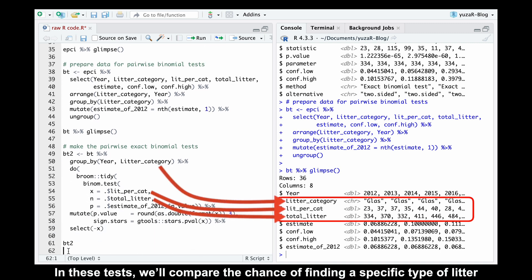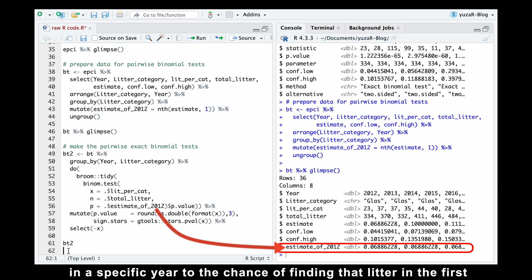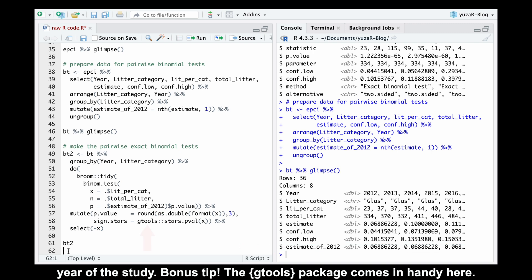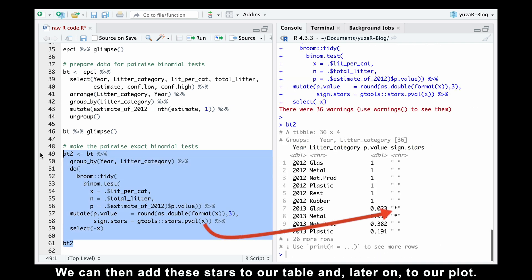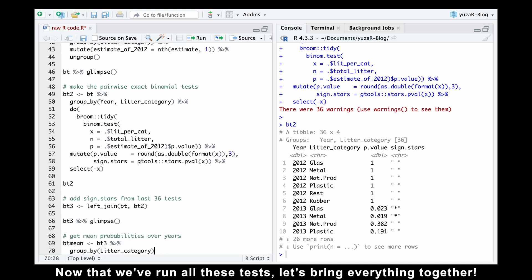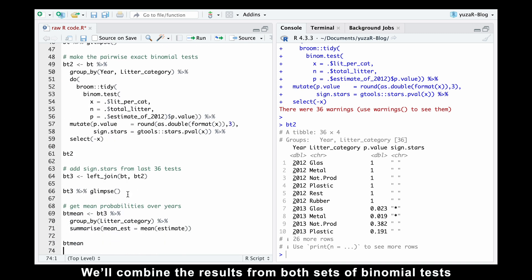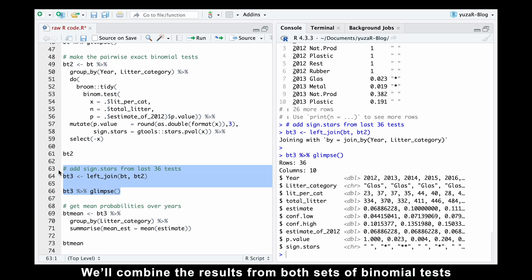It'll hold the expected probability we'll use for the next 36 binomial tests. In these tests, we'll compare the chance of finding a specific type of litter in a specific year to the chance of finding that litter in the first year of the study. Bonus tip, the gtools package comes in handy here. It can translate those numeric p-values we got from the tests into easy-to-understand significance stars. We can then add these stars to our table and later on to our plot. Now that we ran all these tests, let's bring everything together.